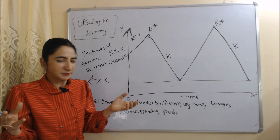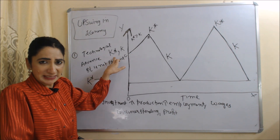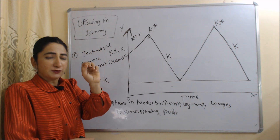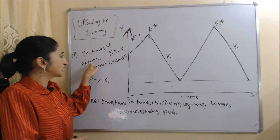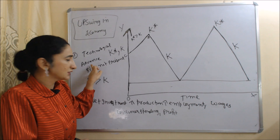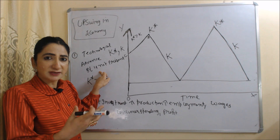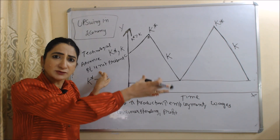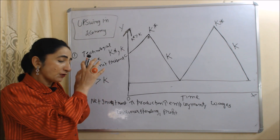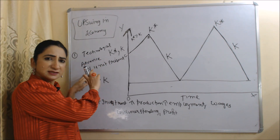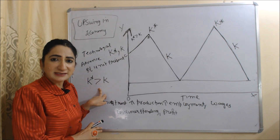Now with the help of this diagram we will talk about upswings and downswings in the economy. On the X-axis we have time, and on the Y-axis we have K* and K. First, we are going to talk about the upswing. We assume β(t) is not present here, because in the case of technological advancement, trade cycles are different — we will discuss that later. For now, we assume β(t) is not present.